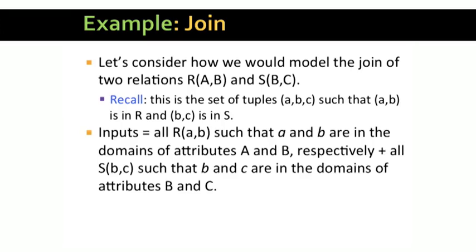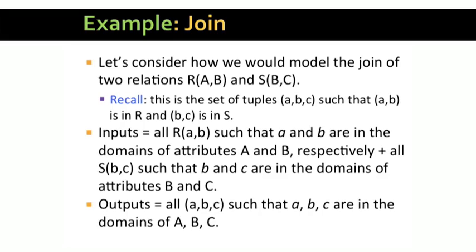In principle, the inputs are all possible tuples in R and all the possible tuples in S. That is, we assume the attributes A, B, and C have finite domains. And any pair of values, one from the domain of A and the other from the domain of B, could be a tuple of R. So these are one group of hypothetical inputs. Also, any value from the domain of B can be matched with any value in the domain of C to form a possible tuple of S, so these are the other hypothetical inputs. Similarly, the possible outputs are all those triples A, B, C, such that each component is taken from the corresponding domain.